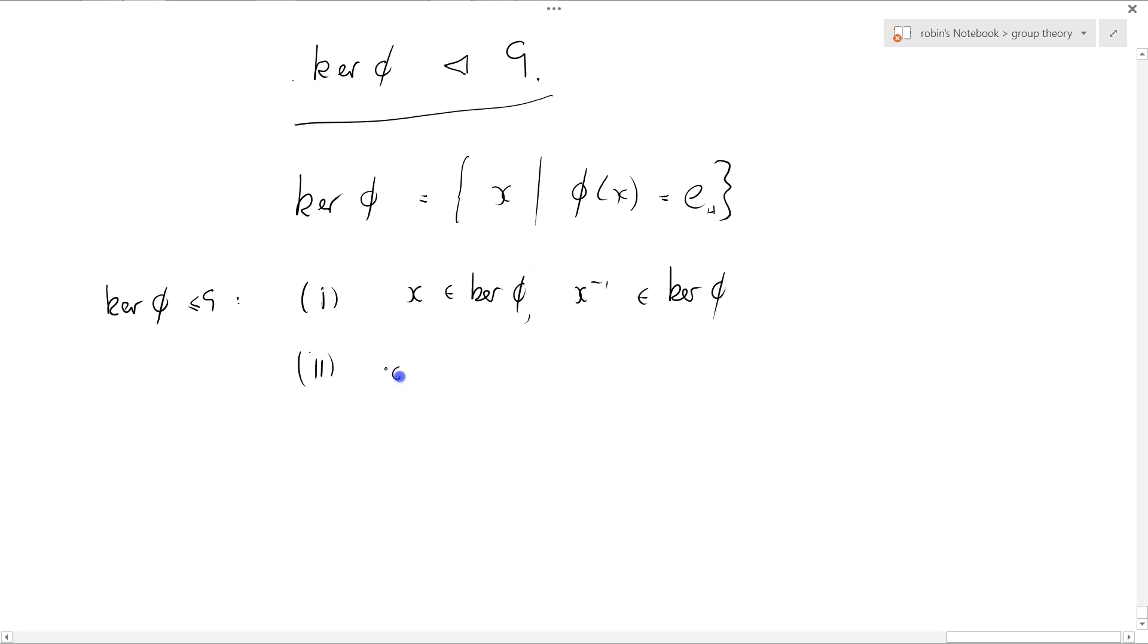And two, if X and Y are in the kernel, then XY, the product of those, is also in the kernel phi. So how do we do the first one?